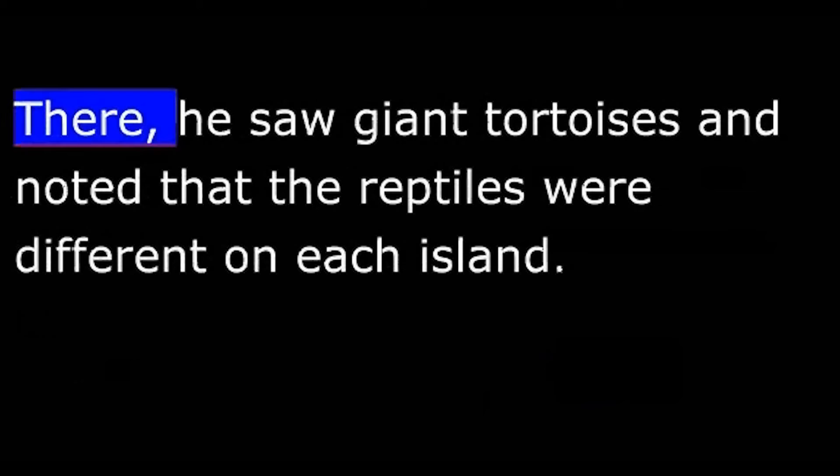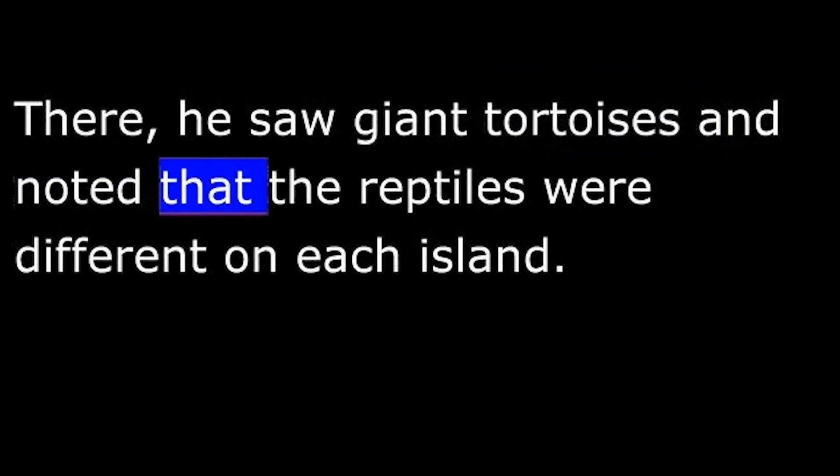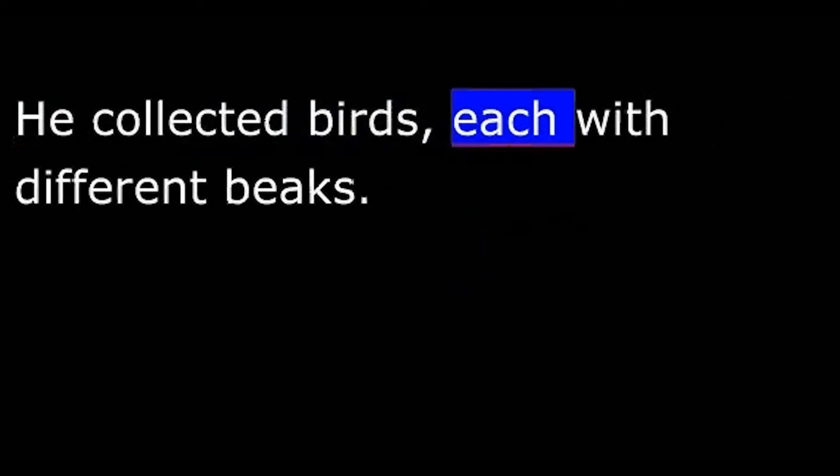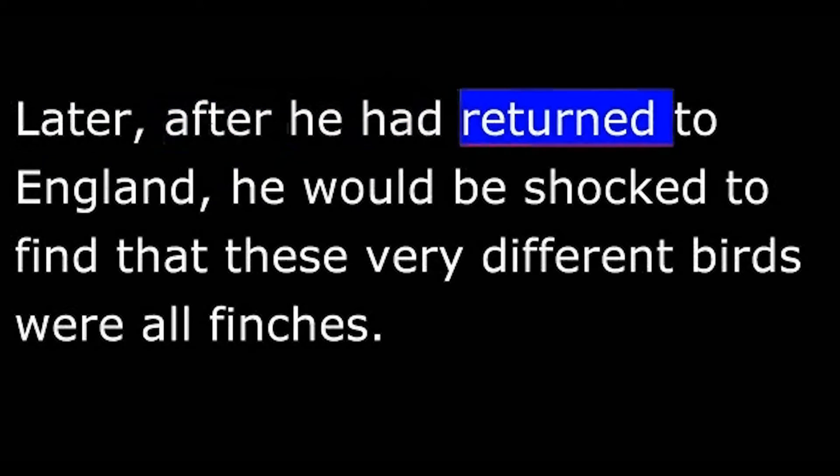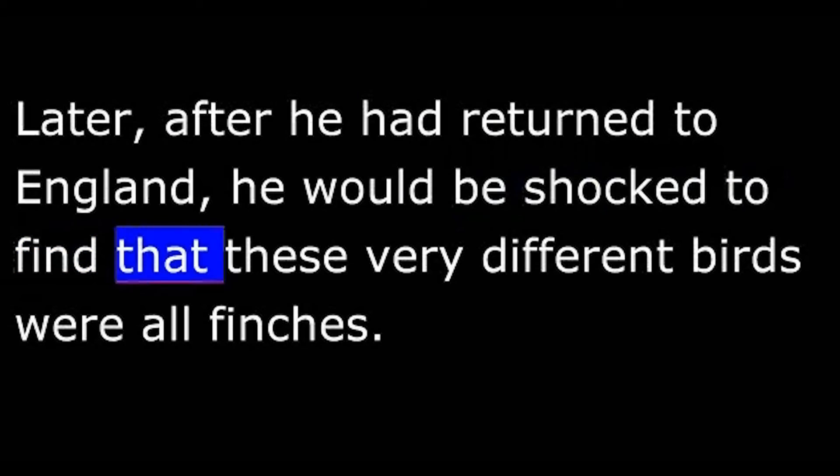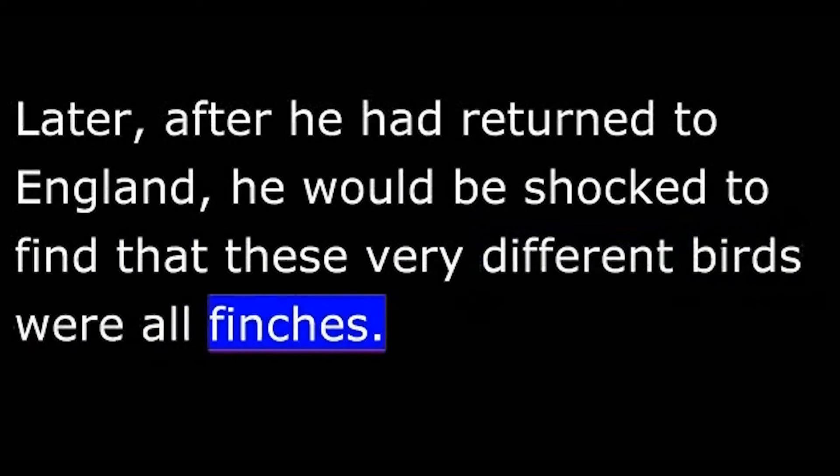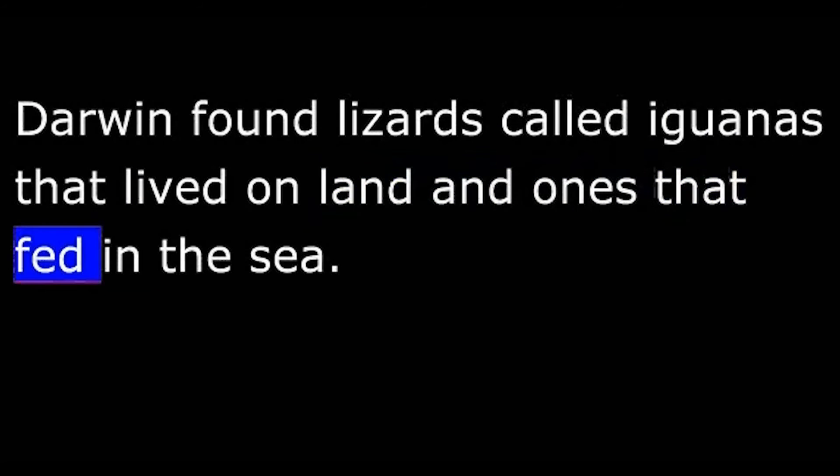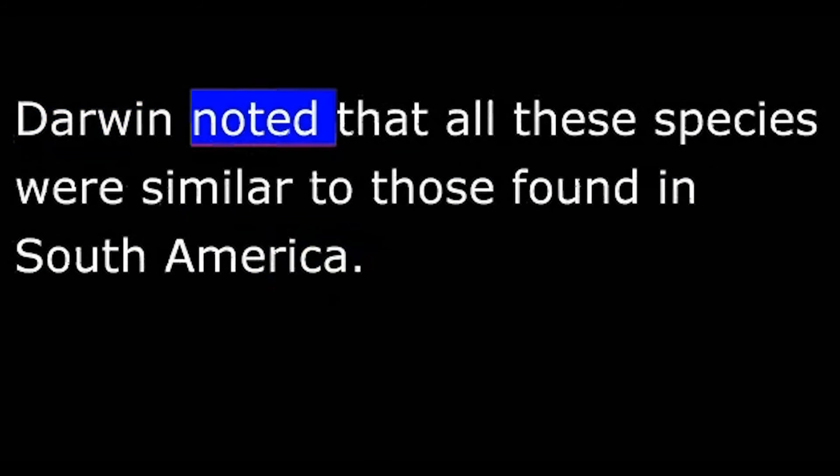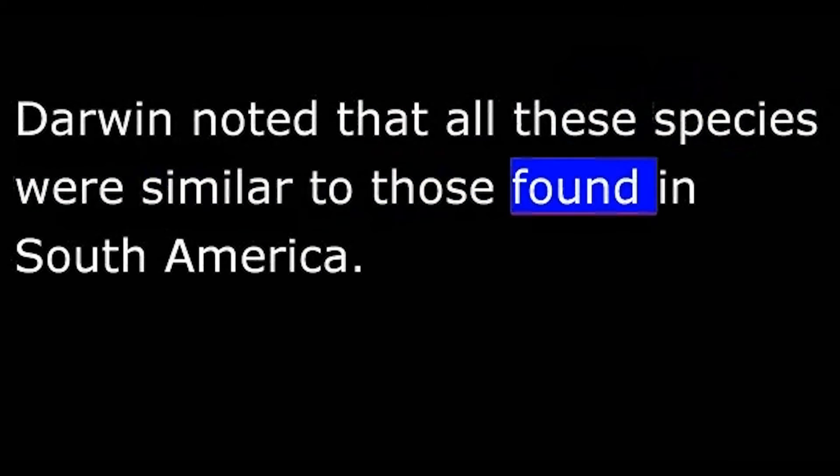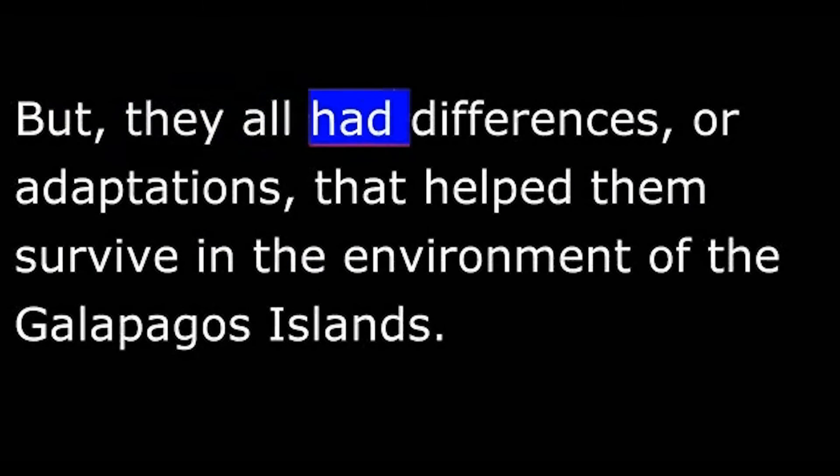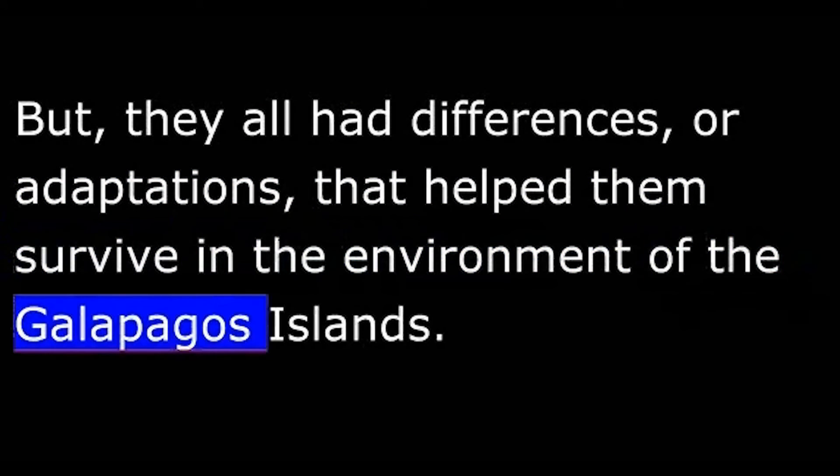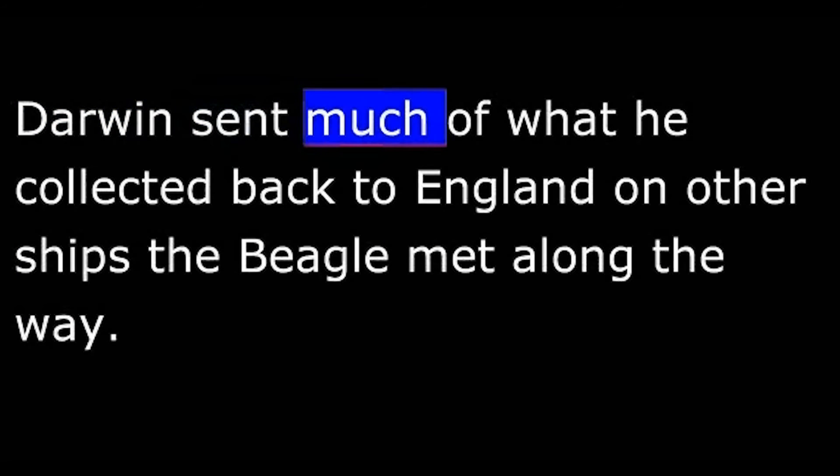There he saw giant tortoises and noted that the reptiles were different on each island. He collected birds, each with different beaks. Later, after he had returned to England, he would be shocked to find that these very different birds were all finches. Darwin found lizards called iguanas that lived on land and ones that fed in the sea. Darwin noted that all these species were similar to those found in South America, but they all had differences or adaptations that helped them survive in the environment of the Galapagos Islands.